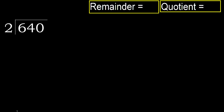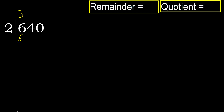640 divided by 2. 6 is not less, therefore with 6: 2 multiplied by which number is nearest 6 but not greater? 2 multiplied by 4 is 8 — 8 is greater. 2 multiplied by 3: 6 is not greater. 6 minus 6 equals 0.